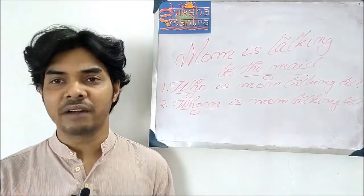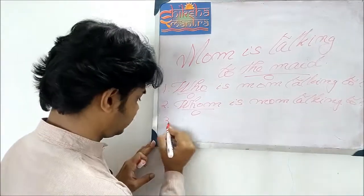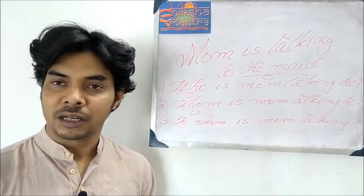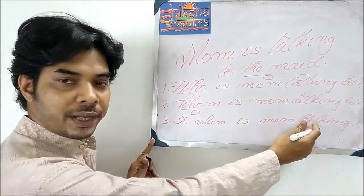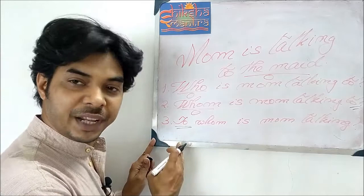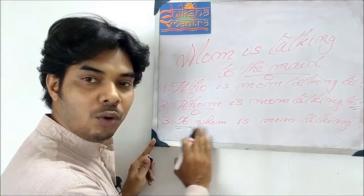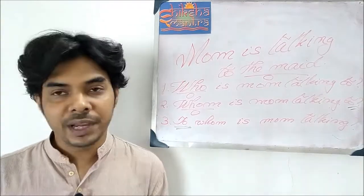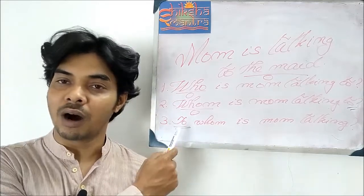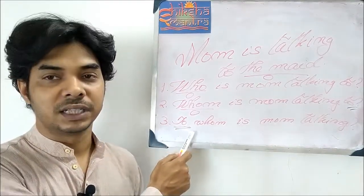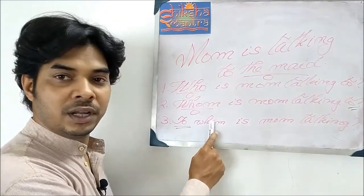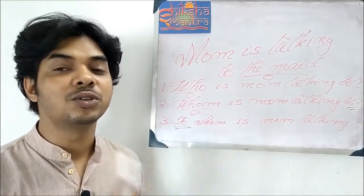There is also a third option — 'To whom is mom talking?' Here the preposition 'to' has been brought to the beginning of the sentence. We are also using 'whom' as the interrogative pronoun. You must remember that when you place the preposition at the beginning of a question, you cannot use 'who' — you must use 'whom'. You can say 'to whom' but you cannot say 'to who.'